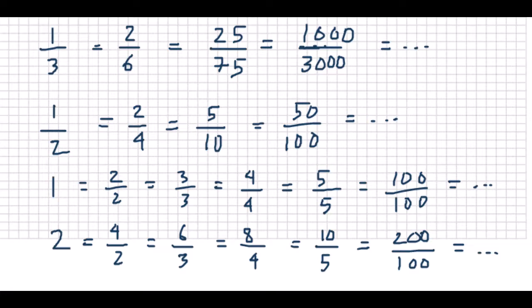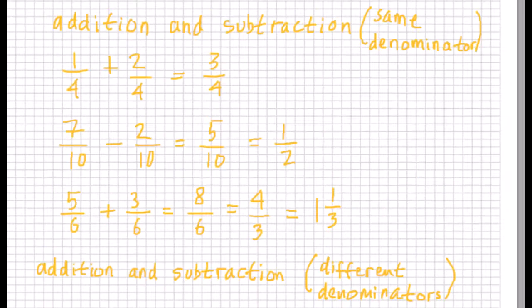Now let's do addition, subtraction, multiplication, and division. To add or subtract fractions having the same denominator, we add or subtract the numerators leaving the denominator the same. For example, 1 over 4 plus 2 over 4 is equal to 3 over 4. And 7 over 10 minus 2 over 10 is equal to 5 over 10, but it is usually preferred to simplify a fraction into the lowest terms, so 5 over 10 can be written as 1 over 2.